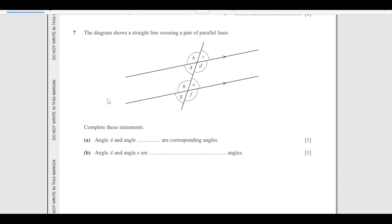Number 7: The diagram shows a straight line crossing a pair of parallel lines. Complete these statements: angle A and angle dash are corresponding. Corresponding angles form an F shape. Angle A is here, an F shape is going to be like this, so angle A and angle G are corresponding angles. Angle A and angle E are: they form a Z shape like this. They are on either side of these parallel lines. These angles are called alternate angles.